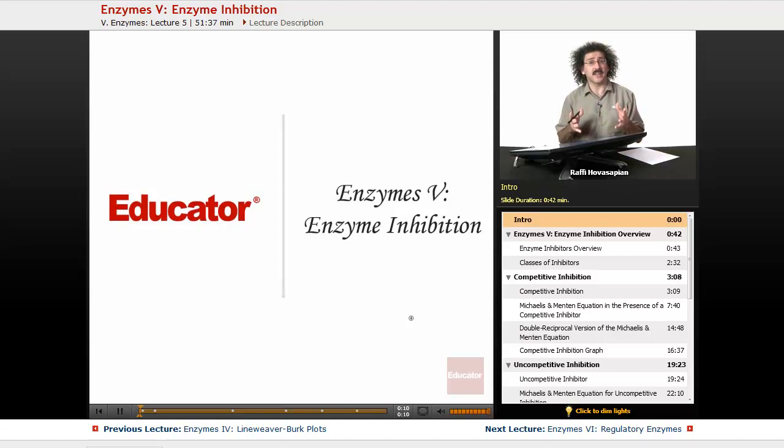Enzyme inhibition is exactly what you think it is. We have an enzyme that does something, and we want to either completely stop it from doing something or slow it down a little bit. There is also something called positive inhibition, where you want to cause an enzyme to do what it does a little bit better, a little bit faster. But for the most part, we're going to be talking about negative inhibition.